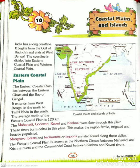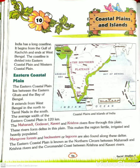The Eastern Coastal Plain is known as the Northern Sirkars between the Mahanadi and Krishna rivers, and the Coromandel Coast between the Krishna and Kaveri rivers. The Coromandel Coast is the south-eastern coast region of the Indian subcontinent, bounded by the Bay of Bengal to the east, the Kaveri delta to the south, extending over an area of about 22,800 square kilometers.